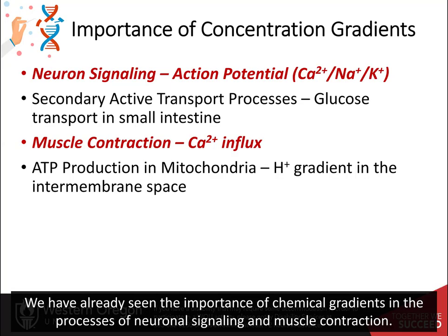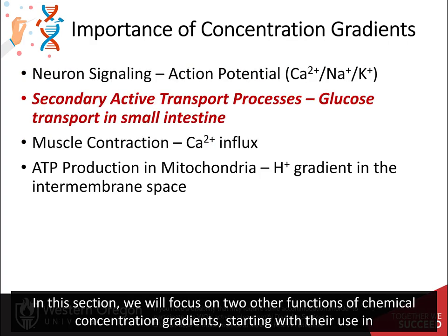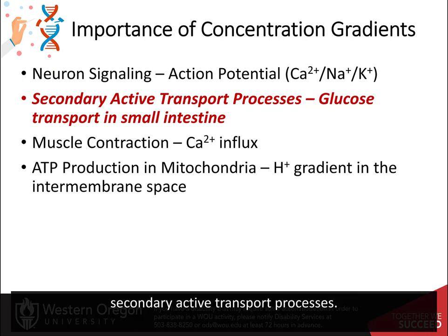We have already seen the importance of chemical gradients in the processes of neuronal signaling and muscle contraction. In this section, we will focus on two other functions of chemical concentration gradients, starting with their use in secondary active transport processes.